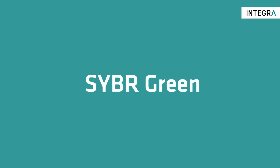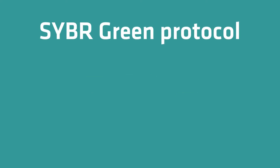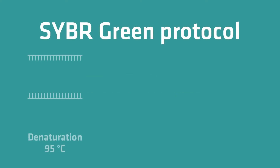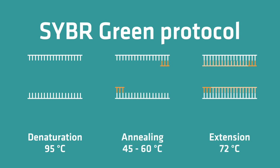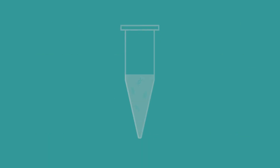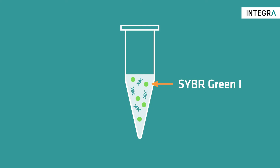Like standard PCR, the SYBR Green protocol consists of denaturation, annealing, and extension phases. The difference is that you add a double-stranded DNA binding dye, SYBR Green I, to your master mix during QPCR setup.